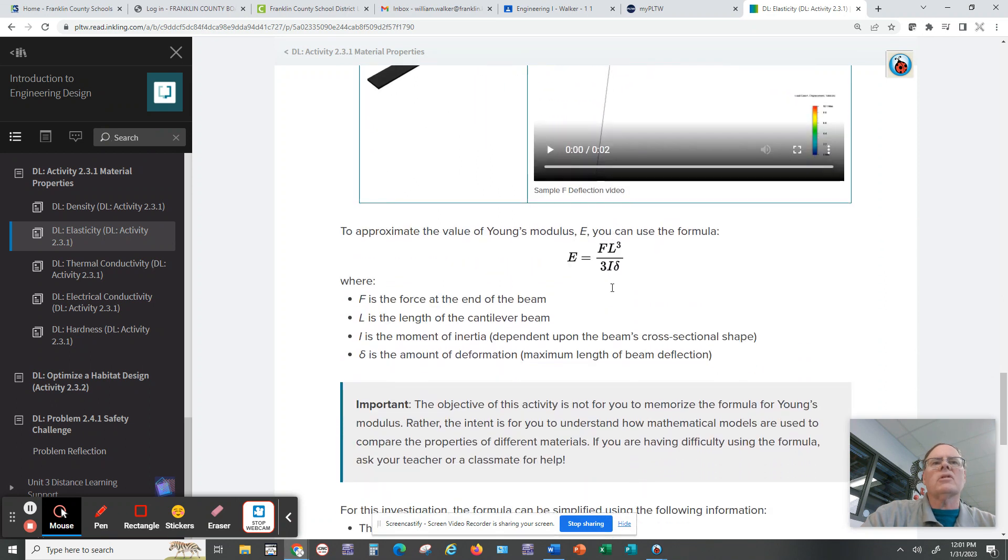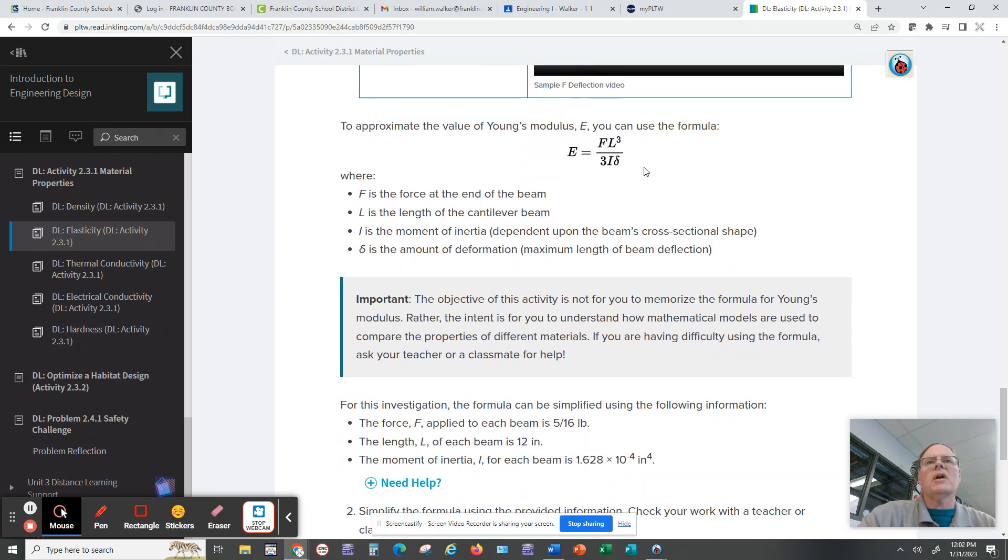What you're going to do is you're going to use Young's modulus formula: E equals F times L cubed over three times I times delta, which is like little d. Little delta stands for the amount of deformation or the maximum deflection that they're giving you.